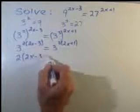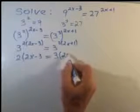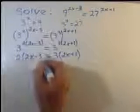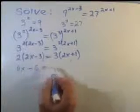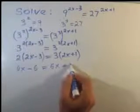2 times 2x minus 3 equals 3 times 2x plus 1. Distribute the factors and we get 4x minus 6 equals 6x plus 3.